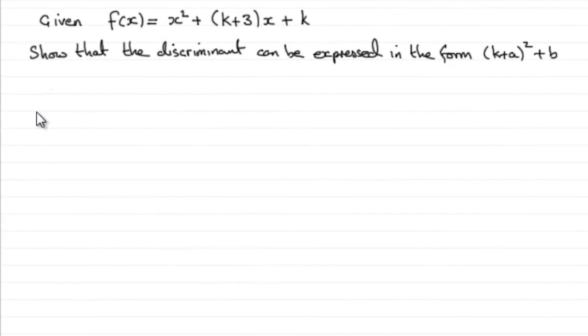Now in this part, part B, we're asked to show that the discriminant can be expressed in the form K plus A all squared plus B. And this is worth two marks.